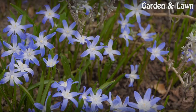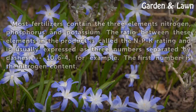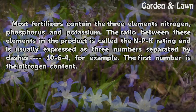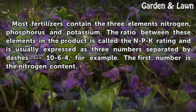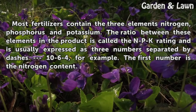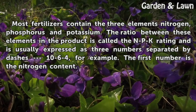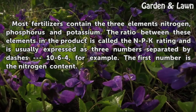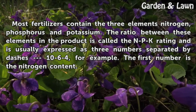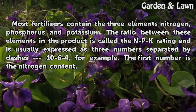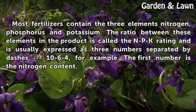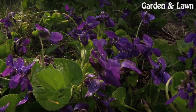Types. Most fertilizers contain the three elements nitrogen, phosphorus, and potassium. The ratio between these elements in the product is called the NPK rating and is usually expressed as three numbers separated by dashes — 10-6-4, for example. The first number is the nitrogen content.